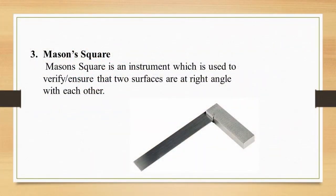Tool number three is the mason square. The mason square is an instrument used to verify or ensure that two surfaces are at right angles to each other. It is used by masons, and in the next video you will see how it works.